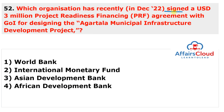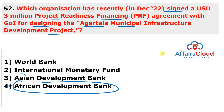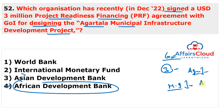Question 52: Which organization signed a 3 million dollar project readiness financing agreement with the Government of India for designing the Agartala Municipal Infrastructure Development Project? The answer is the Asian Development Bank (ADB). ADB and the Government of India signed the agreement to assist preparatory operations for the Agartala Municipal Infrastructure Development Project, aiming to strengthen municipal infrastructure in priority areas of Agartala, Tripura, and support the Tripura government's resource mobilization.